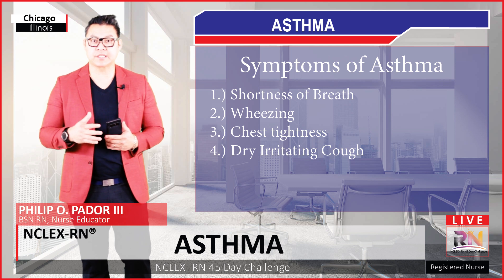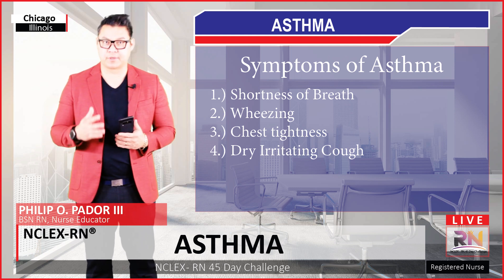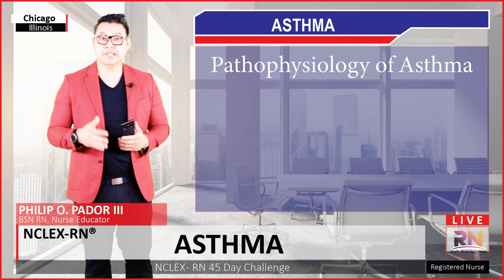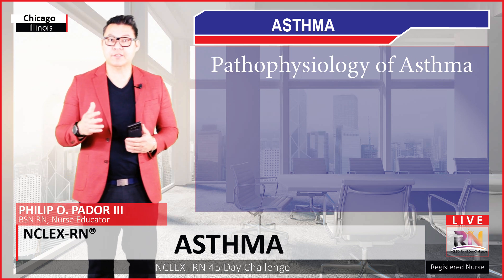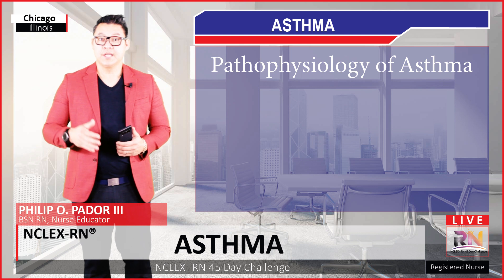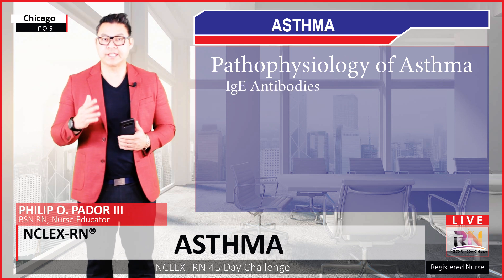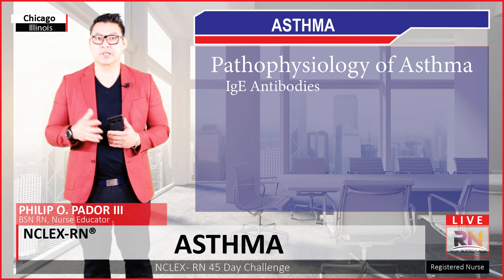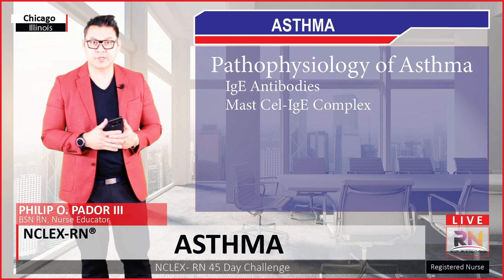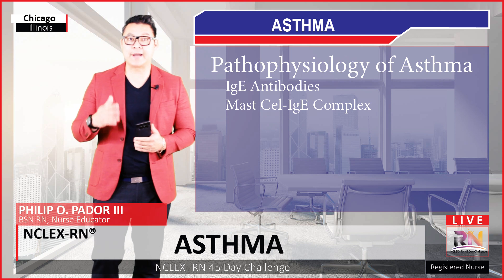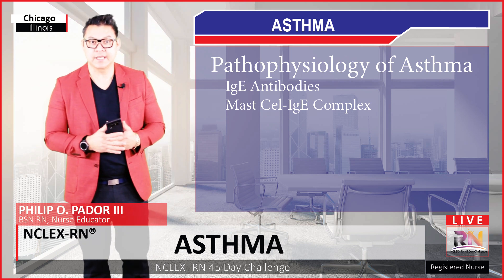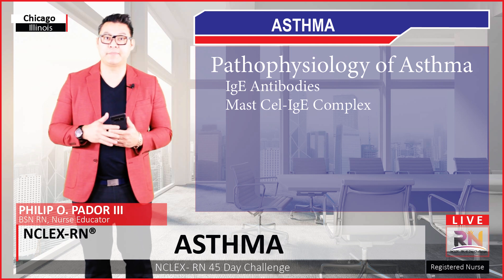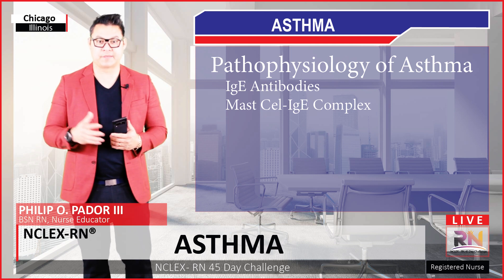Now that we have identified some changes that occur in the asthmatic bronchial, let us look at the pathophysiology. Let's look at some key players. The main one is the IgE antibodies. IgE antibodies are important because they can bind to receptors on mast cells, forming a mast cell–IgE complex. The mast cell–IgE complex will recognize allergens and essentially begin releasing large amounts of histamine.